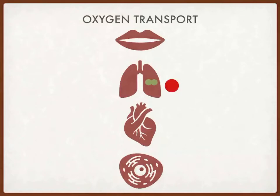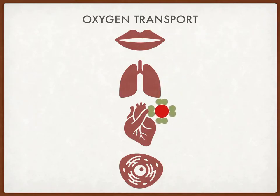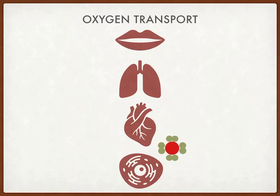Every red blood cell has millions of hemoglobin molecules, and every hemoglobin molecule can bind to four oxygen molecules. Then it transports that down to the left side of the heart, goes through the left ventricle, out to the body.